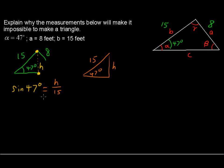So multiply each side by 15. So now you have 15 times sine of 47 degrees equals the height. Then the height will equal about, rounding, about 11 feet.